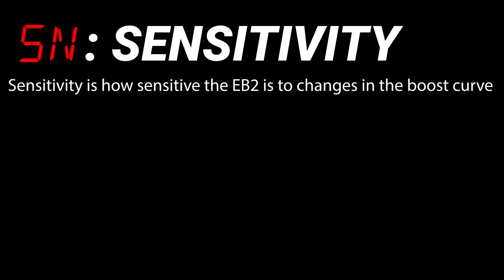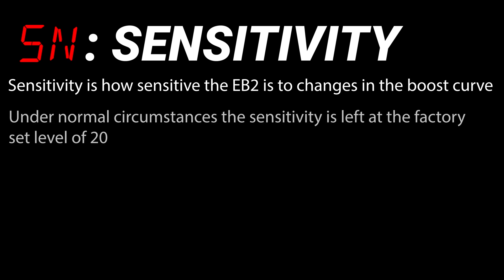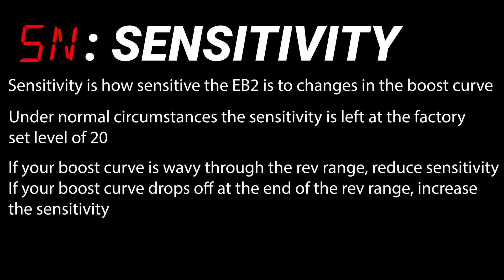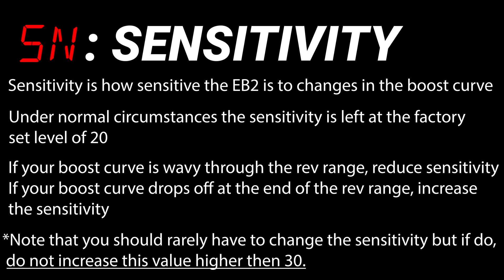SN stands for sensitivity. The sensitivity is how sensitive the eBoost 2 is to changes in the boost curve. Under normal circumstances the sensitivity is left at the factory set level of 20. If your boost curve is wavy throughout the rev range, reduce sensitivity. If your boost curve drops off at the end of the rev range, increase sensitivity. Please note that you should rarely have to change the sensitivity, but if you do, do not increase this value higher than 30.